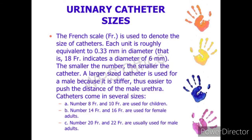There are different sizes of urinary catheter, and the French scale is used to denote the size. For male patients, a larger size catheter is used than for female patients. For female patients, size 14 or 16 are mainly used. For male patients, 20 to 22 French are usually used. For children, 8 to 10 are usually used.